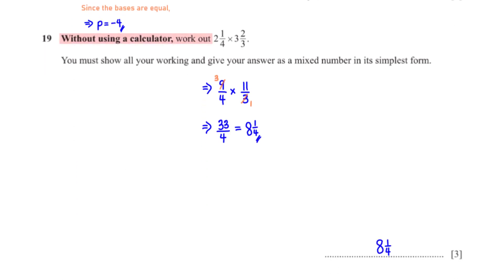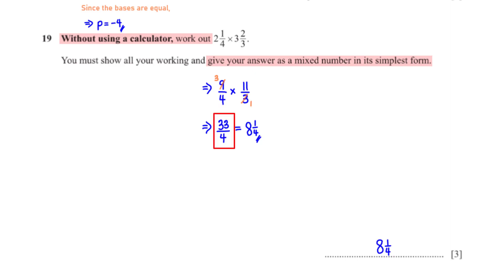Without using a calculator, work out 2 and 1/4 times 3 and 2/3. Show all working and give the answer as a mixed number in simplest form. First, convert the mixed fractions to improper fractions: 2 and 1/4 becomes 9/4, and 3 and 2/3 becomes 11/3. Then multiply: 3 goes into 9 three times, so the numerator is 3 times 11 equals 33, and the denominator is 4 times 1 equals 4. Since 33/4 is improper, convert: 4 goes into 33 eight times with remainder 1, giving 8 and 1/4.